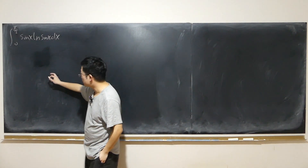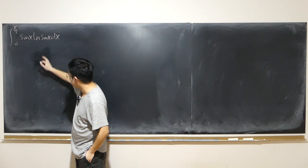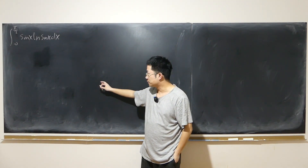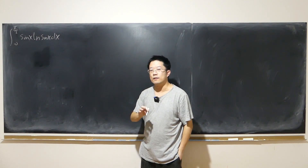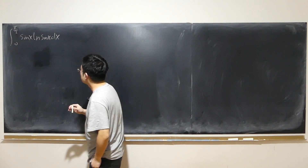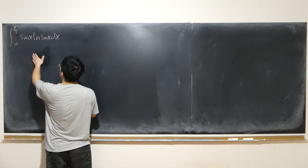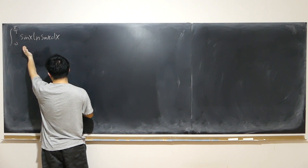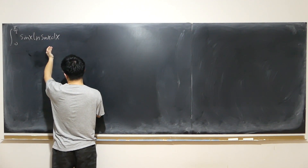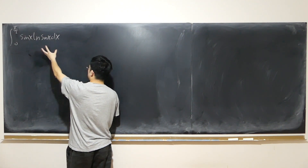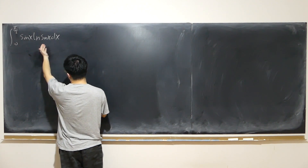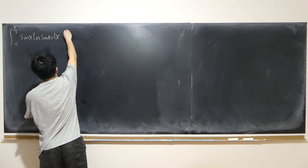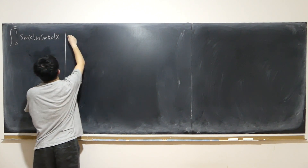We have an innocent-looking integral from 0 to half pi of sin(x)·log(sin(x)) dx. During the process, I will meet a first obstacle, and you can pause the video and think of some solution to tackle that. Before we do the first step, we have to recognize what's going on here. We have sin(x) inside the log, and the derivative of log(sin x) should have cos(x) on top, so that way we can cancel out sin(x). That motivates us to use integration by parts.